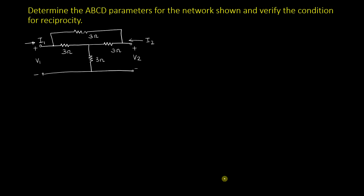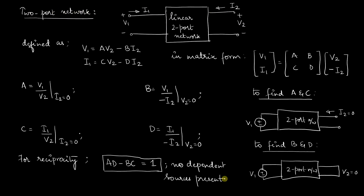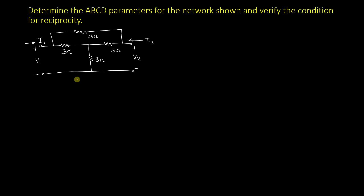These A, B, C, D parameters are also referred to as the T parameters — Transmission parameters or T parameters. Looking at this particular circuit, you can see all three resistances are the same: 3 ohms, 3 ohms, 3 ohms.